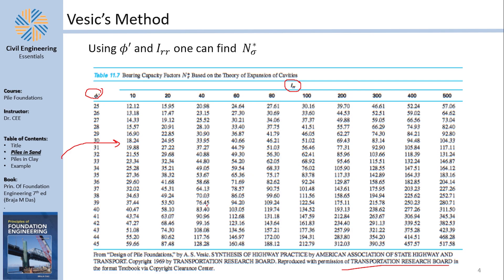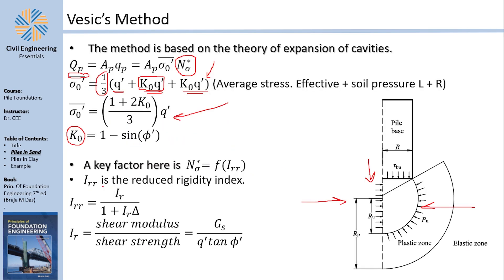Now what is Irr? Irr is something called the reduced rigidity index. So there is something called a rigidity index and there is something called a reduced rigidity index. The reduced rigidity index is going to be a fraction of the rigidity index and it depends on the rigidity index and the volumetric strain, because the more volumetric strain you have, the less rigid the soil becomes. And that's why it's called the reduced rigidity index.